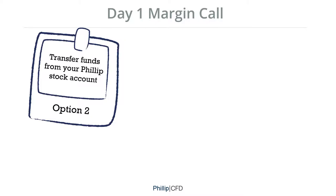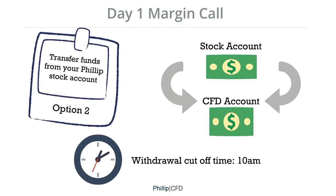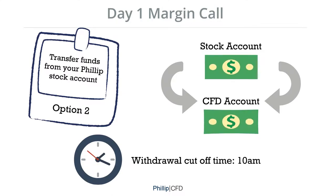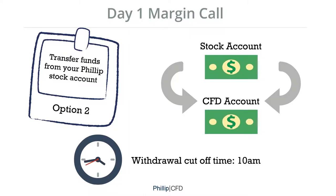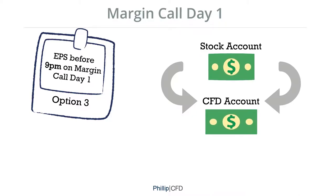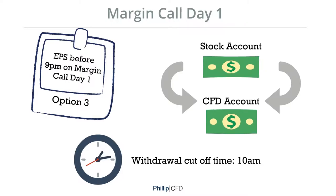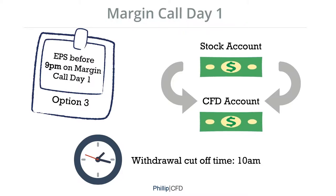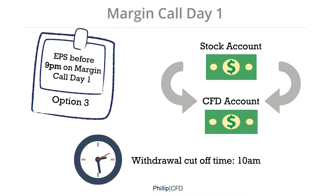Option 2: Transfer funds from your Philips stock account to your CFD account. Please take note that the redrawer cut-off time is 10am. If funds are transferred after the cut-off time, please inform your trading representative. Option 3: EPS before 9pm on margin call day 1 if you do not have sufficient funds in your stock account. Once you have done the EPS, your funds should be credited in your stock account by the next morning, after which you will have to submit a redrawer form to transfer the funds to your CFD account to fulfil the margin call.